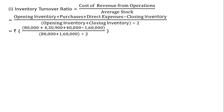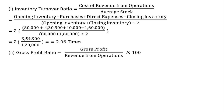That is divided by rupees 80,000 plus rupees 1,60,000 whole divided by 2, which equals rupees 3,54,900 divided by rupees 1,20,000, which equals 2.96 times. In the second case, gross profit ratio is equal to gross profit upon revenue from operations into 100.